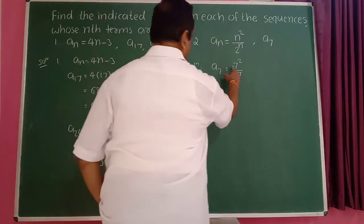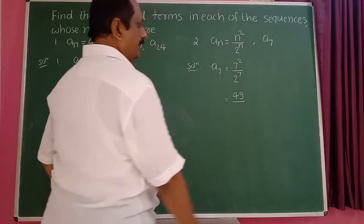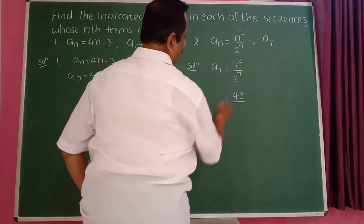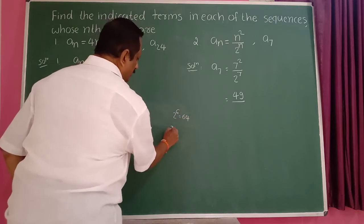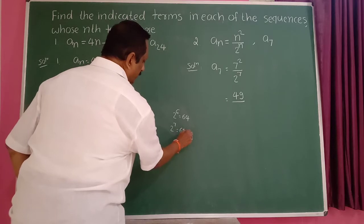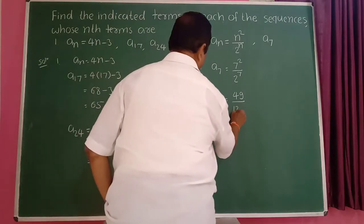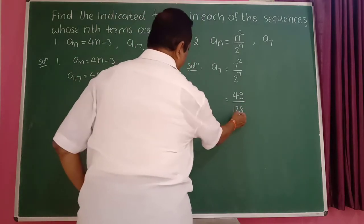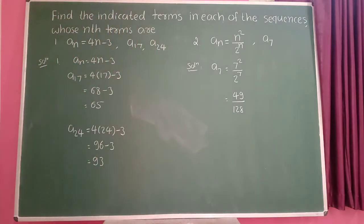7 squared is 49. Divided by 2 raised to 7. Now 2 raised to 6 is 64, so 2 raised to 7 is 64 into 2, which is 128. Therefore, 49 divided by 128. That is the 7th term.